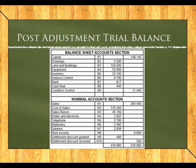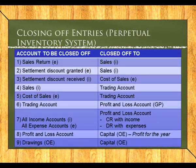After all adjustments, we prepare a post-adjustment trial balance — just to check that the debit side still equals the credit side. Then we begin closing entries. This is the point where we need to consider which inventory system is being used. Starting with the perpetual inventory system: